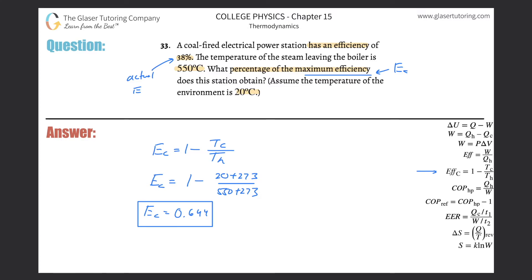But it tells us that the actual efficiency is basically 38. So now it wants us to find what percentage of the maximum efficiency does this station obtain? Meaning, in other words, if I had to rephrase the question, what percent is 0.38 of 0.644?